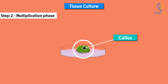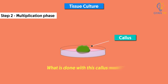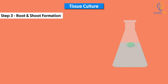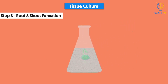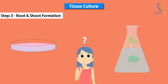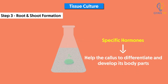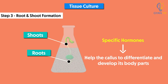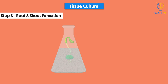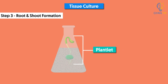As you can see, some cells have multiplied into a bigger lump of cells. The callus is then moved to another nutritive medium that encourages growth and differentiation into roots and shoots. The main difference in this medium is that it contains specific hormones in addition to nutrients, which help the callus differentiate and develop roots and shoots. The callus with roots and shoots is now called a plantlet. This is the third step, called root and shoot formation.